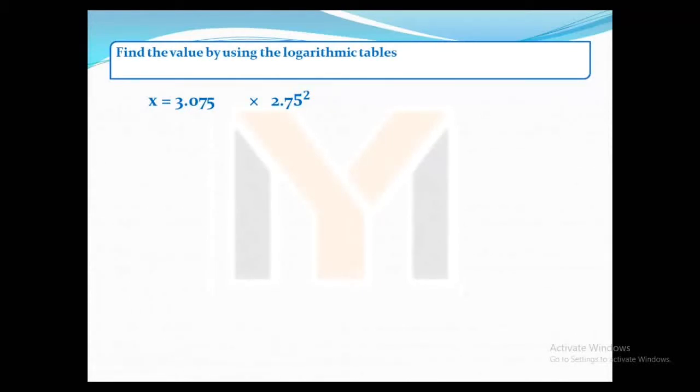First of all, what we have to do is enter lg. There's only two signs, and if there's a multiplication, we have to convert that into plus sign. I have entered lg, so lg x equals lg 3.075 plus lg 2.75, and that's squared.